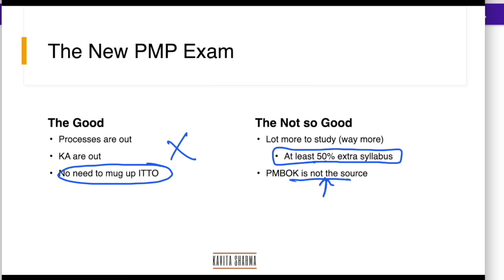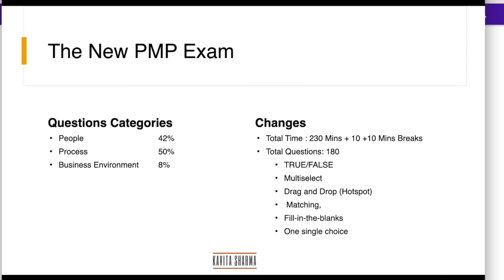PMBOK is not the source, but at least you get one PDF from PMI which is supposed to be the source of all the PMP examination questions. What are the changes in the PMP exam? You get a total time of 230 minutes — previously it used to be 4 hours or 240 minutes. There are planned breaks of 10 and 10 minutes.